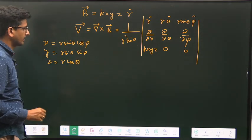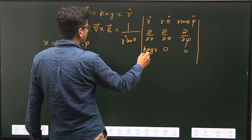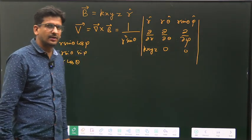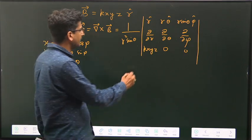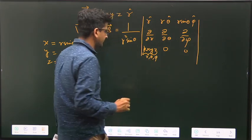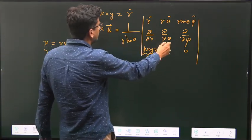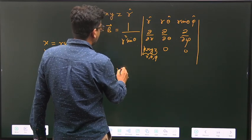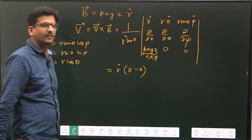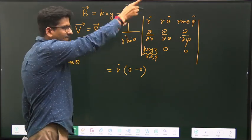So that means this X will be function of R, theta, phi; Y will be function of R, theta, phi; and Z will be function of R and theta. So essentially this will be function of R, theta, and phi. Now if you calculate this, you see R cap will become zero minus zero, so R cap will not survive.